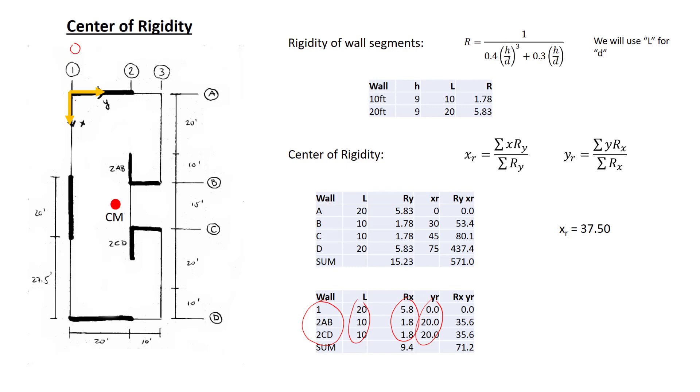Wall 1 is at y is equal to 0. Walls 2AB and 2CD are at y is equal to 20 over here. Multiply the rigidity times the location to get these values. Compute the sums, and with this equation and these values in the sums, we get the y coordinate for the center of rigidity.